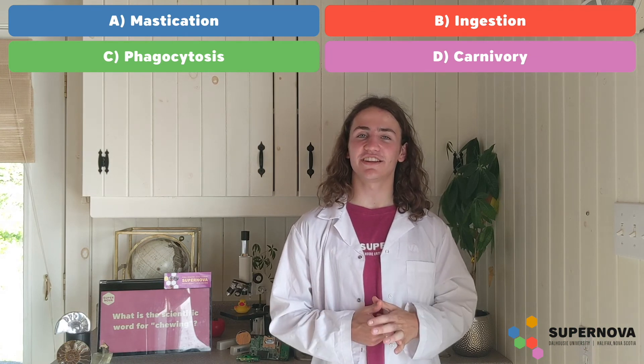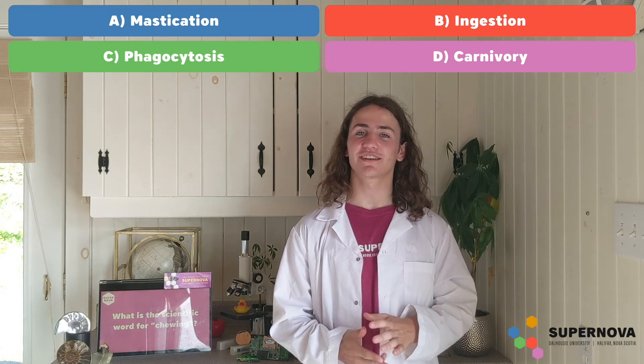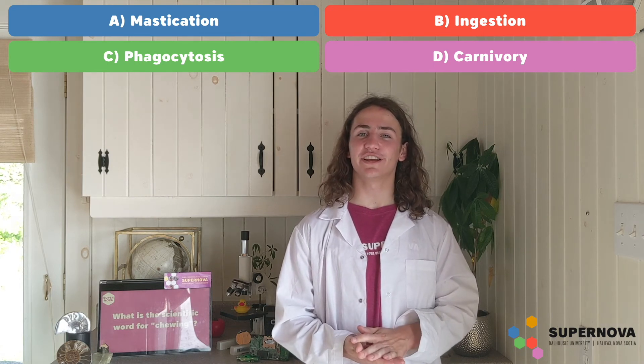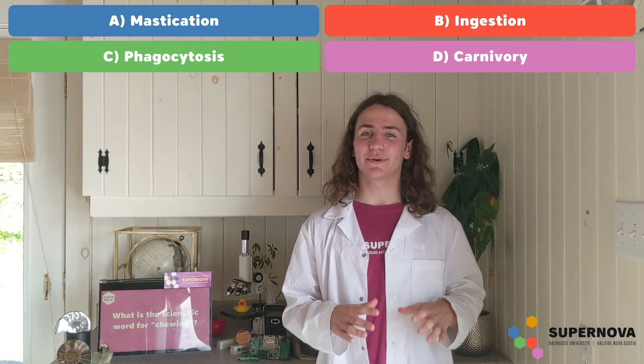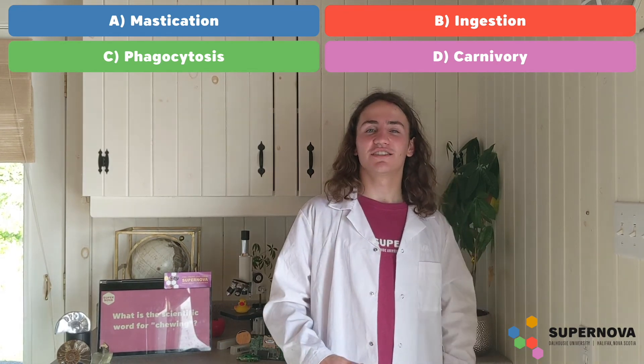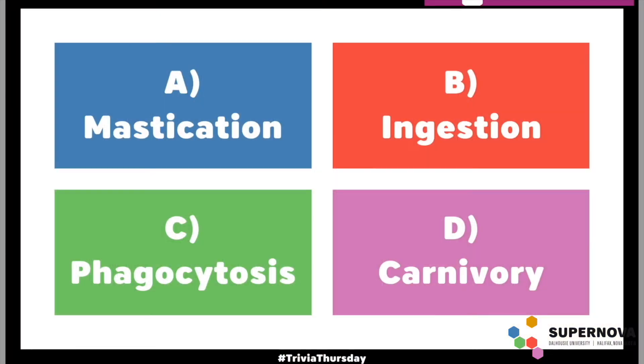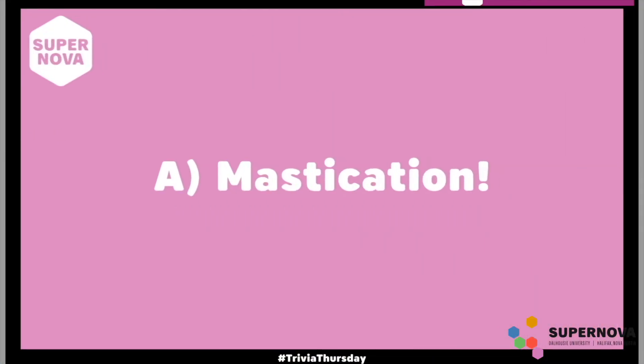Biology is the branch of science that looks at living things. Our biology question says: what is the scientific word for chewing? Is it mastication, ingestion, phagocytosis, or carnivory? I'll give you a minute to think about it. These are pretty huge words, so don't feel scared to take a guess.